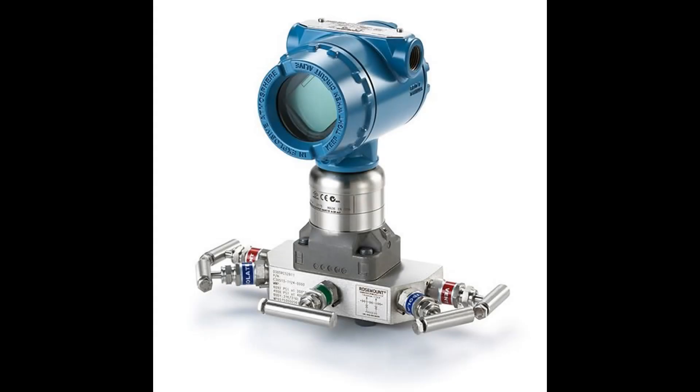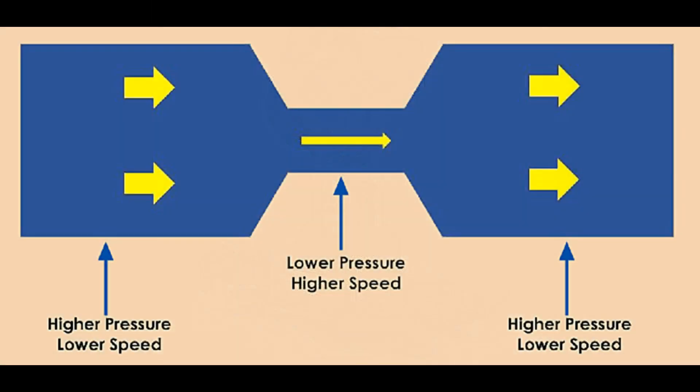A differential pressure transmitter is a common device used in process industries. It can be used to measure fluid flow. It operates based on the principle of Bernoulli's equation, which relates the pressure drop across a restriction in a pipe to the flow rate of the fluid.